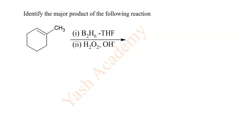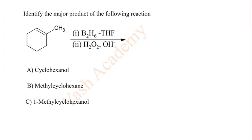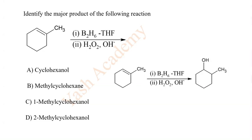Identify the major product of the following reaction. Options: A cyclohexanol, B methylcyclohexane, C 1-methylcyclohexanol, D 2-methylcyclohexanol. So correct answer option of this question is D.